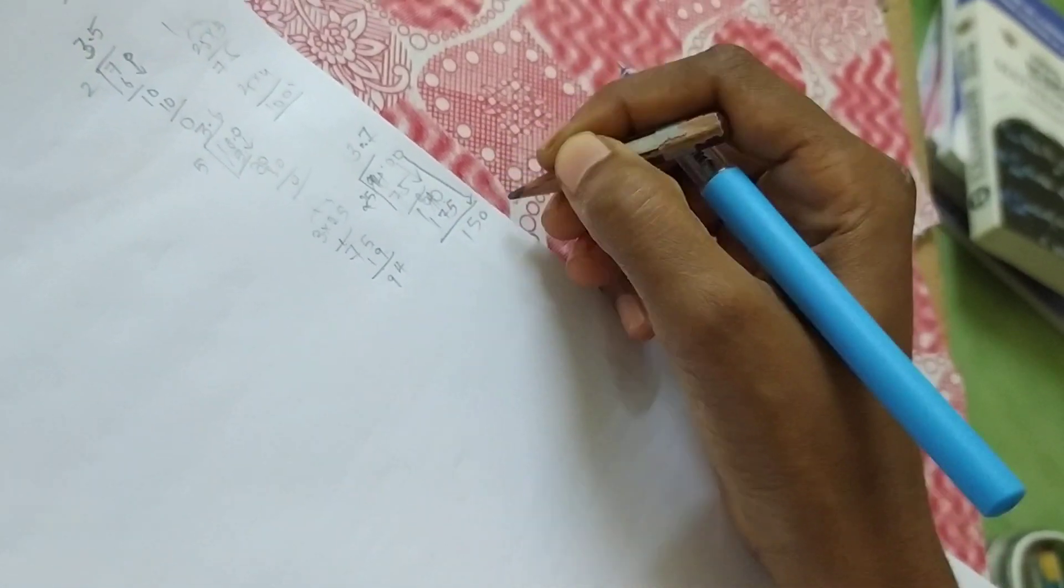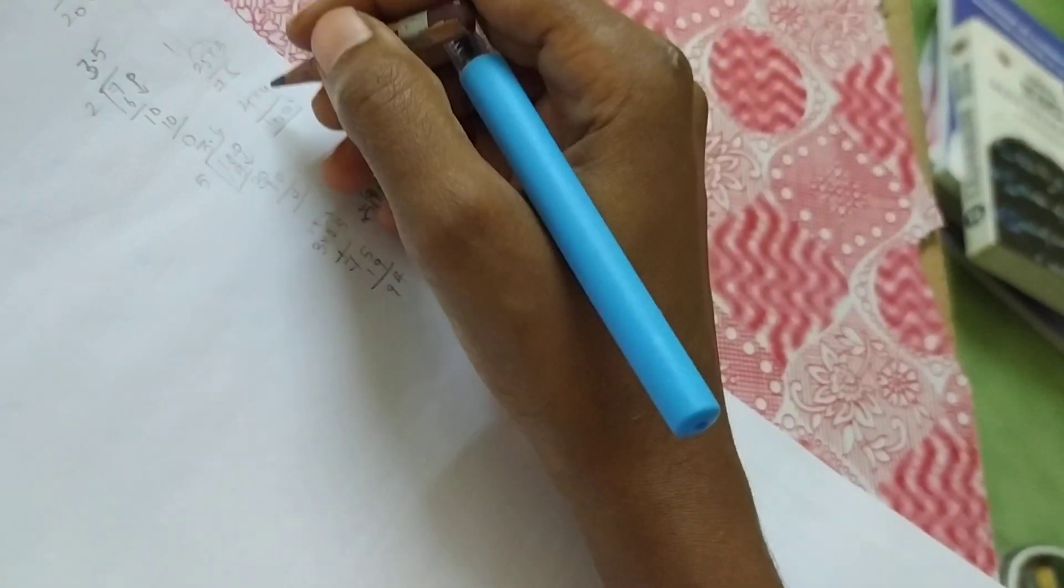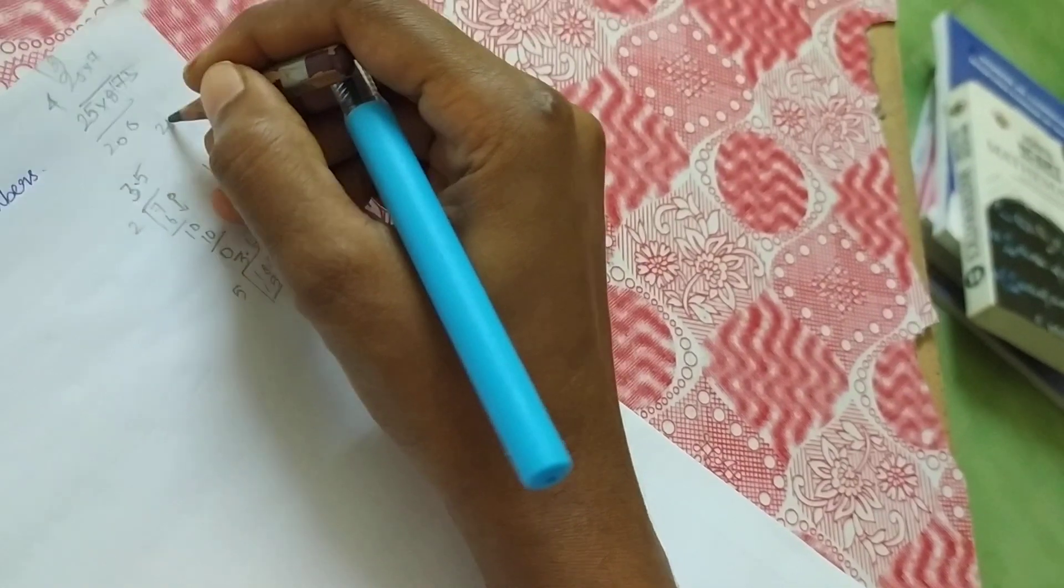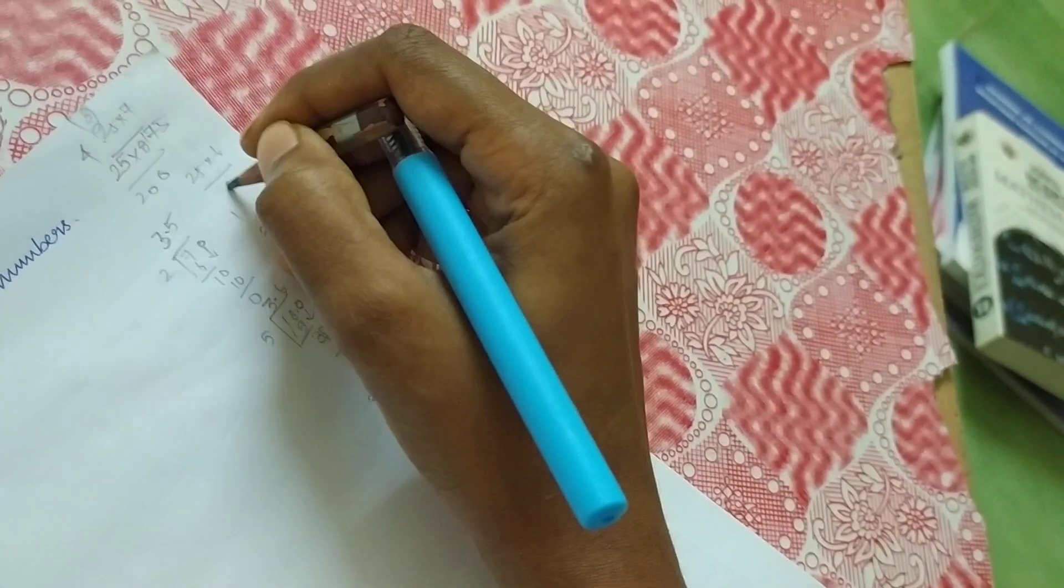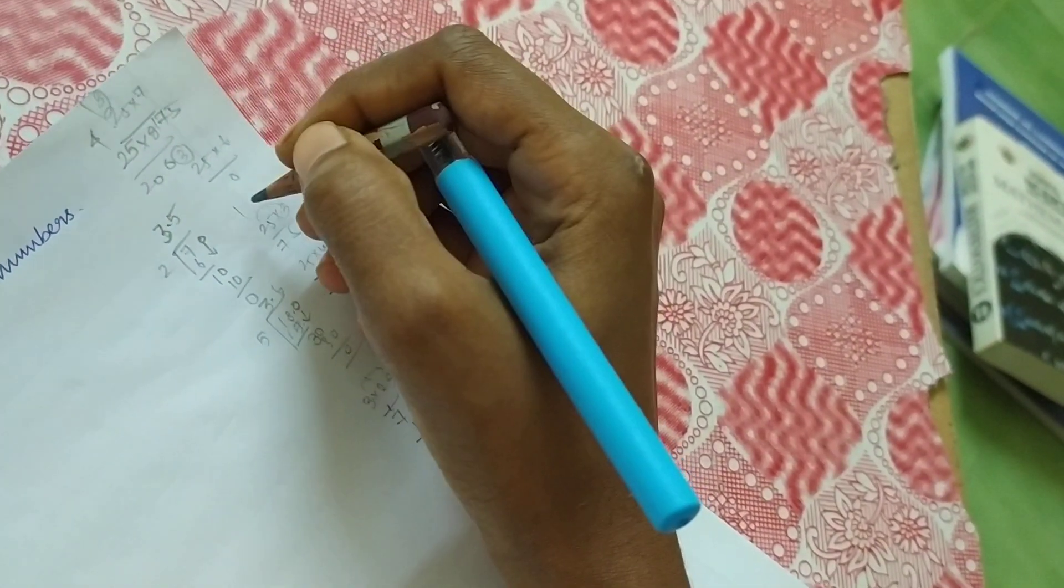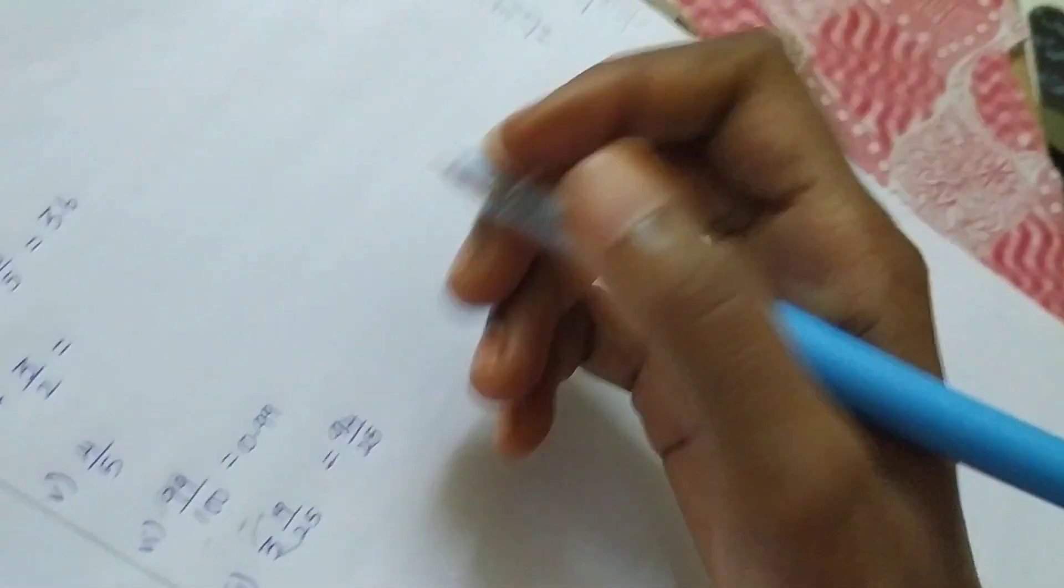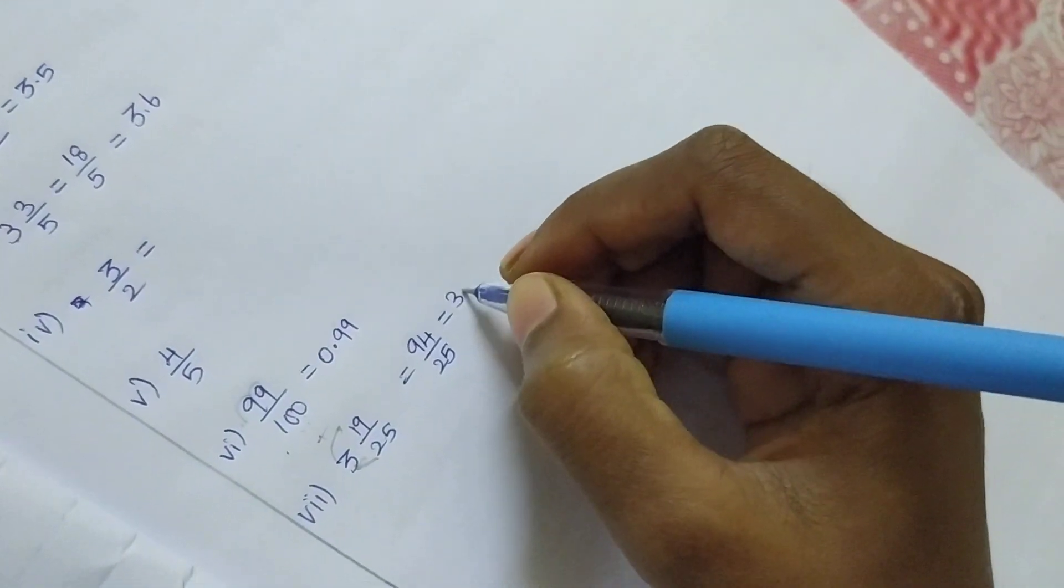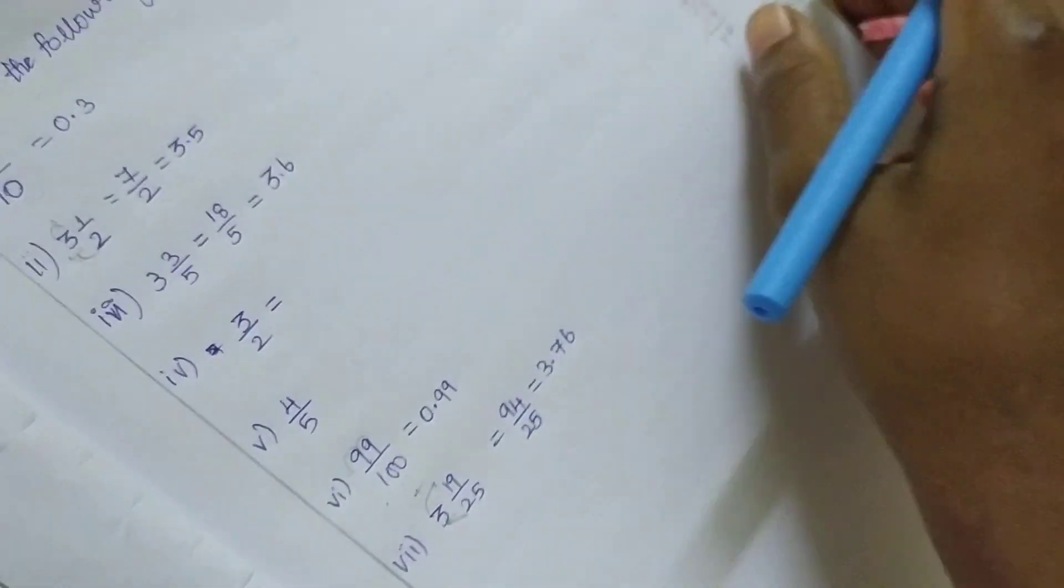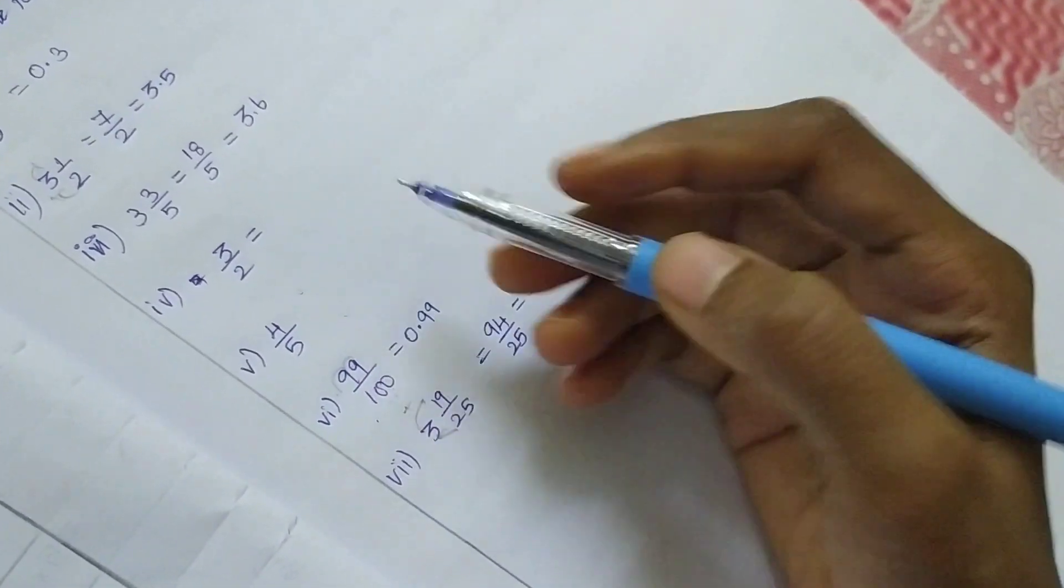150 ÷ 25... 25 × 6: 6 × 5 = 30, 6 × 2 = 12 + 3 = 15, so 150. Zero. So 3.76. This is the method to find out.